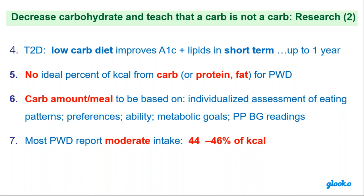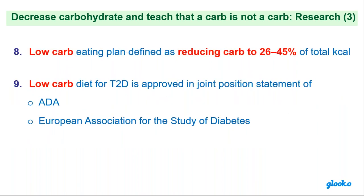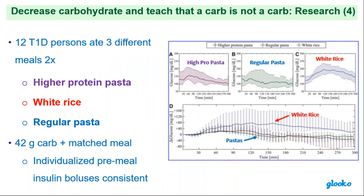Most of our patients report a moderate intake of carb, 44 to 46 percent. The good news is that the low-carb eating plan has a definition: reducing carb to 26 to 45 percent, with the average around 44 to 46. The low-carb diet is now approved in a joint position statement of the ADA and the European Association for the Study of Diabetes, so it is mainstream now in terms of medical nutrition therapy.